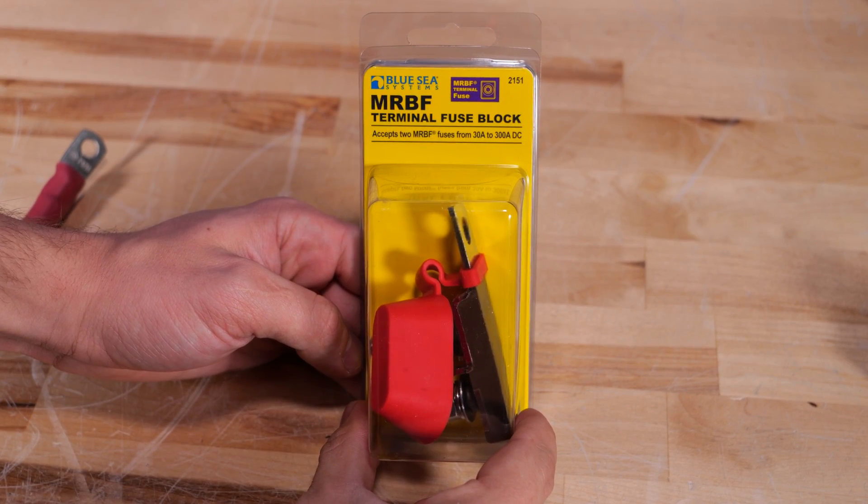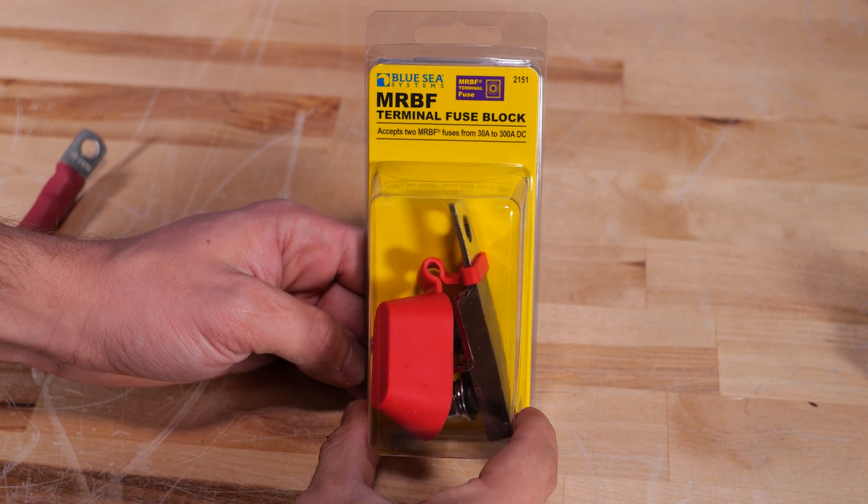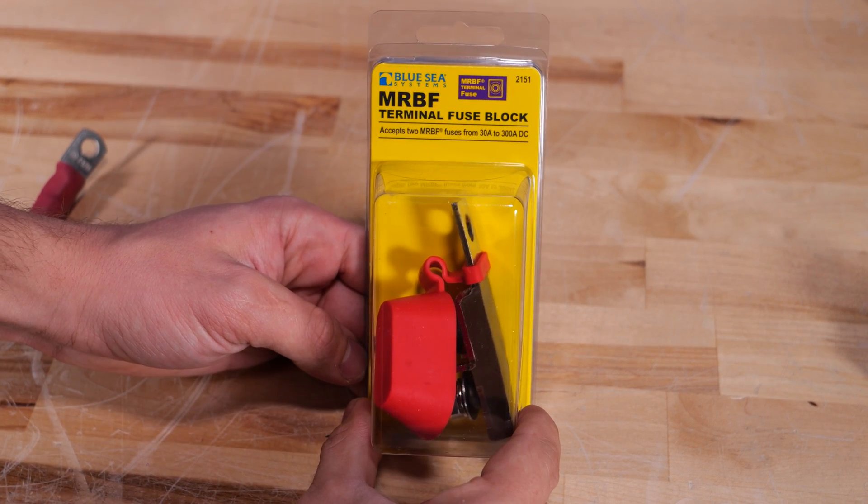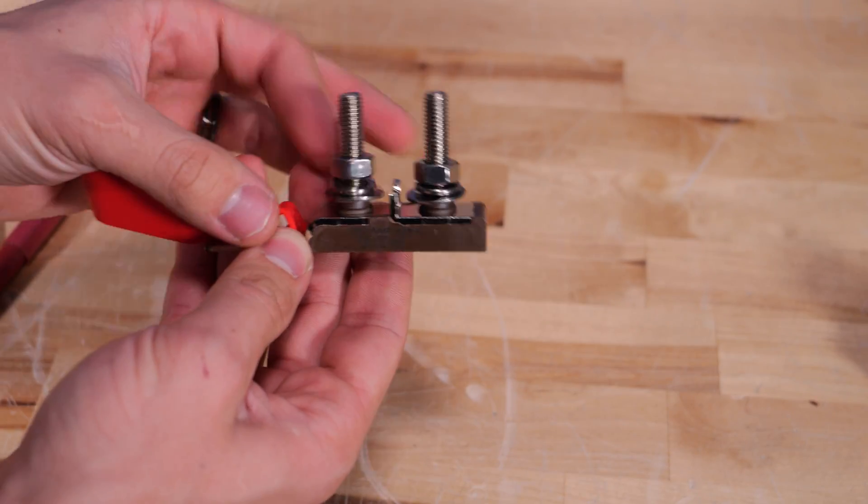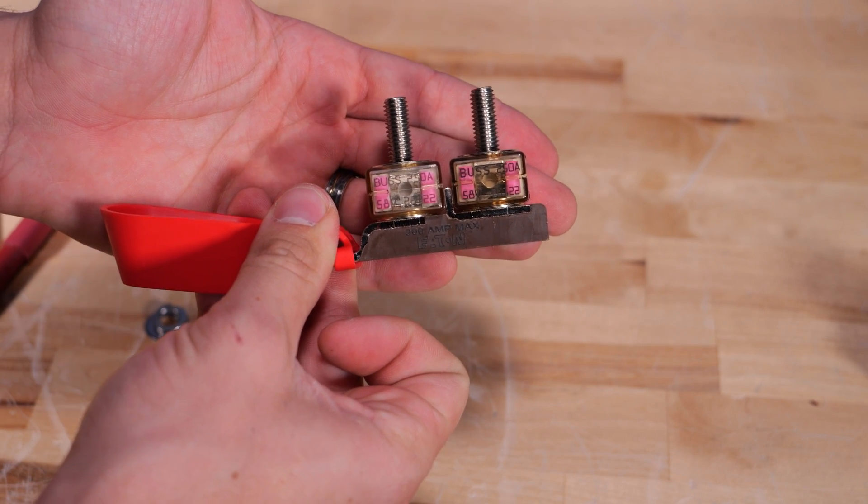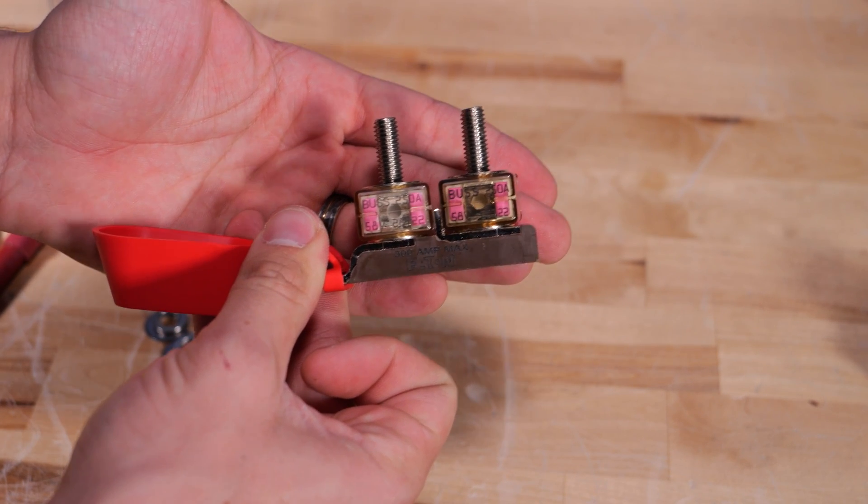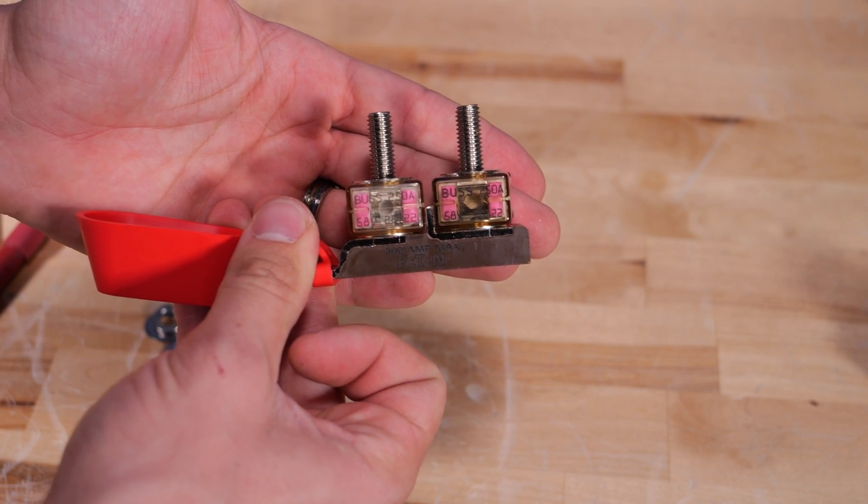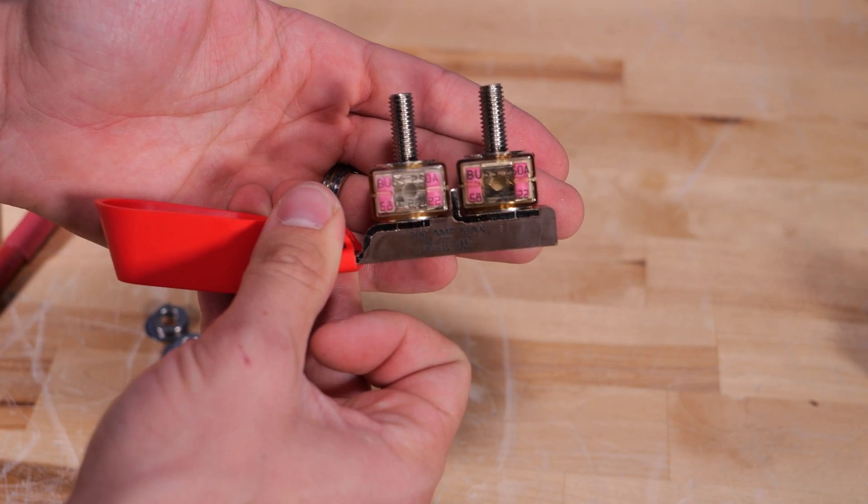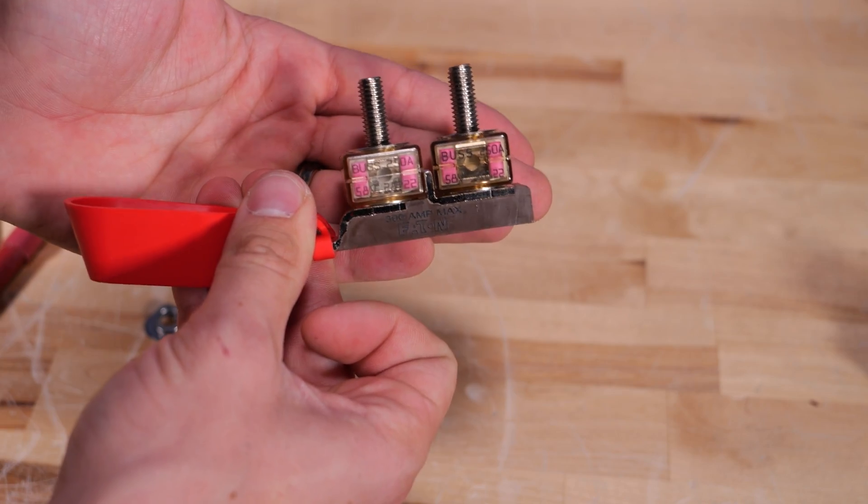Taking things to the next level we have the model 2151, this is just like the fuse holder we just saw except this one has two studs instead of one. This is also rated for 300 amps max. This is very convenient if you needed to put two different size fuses for two different devices, let's say one fuse going to your inverter and the other one going to your 12 volt DC system in say an RV for example.